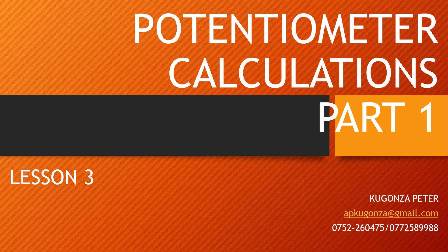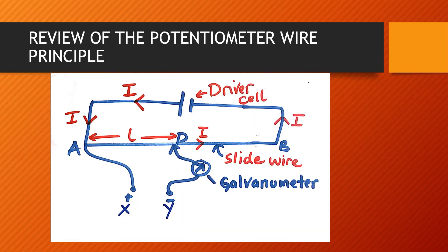Hello everyone. In this lesson I'm going to explain the potentiometer calculations, but these calculations are based on the applications of the potentiometer wire that I explained in lesson two, that's why I have referred to them as part one. Before we get into those calculations we need to review the principle of the potentiometer wire. If a driver cell is connected to the potentiometer wire it maintains a steady current through that wire. Since the wire AB has uniform resistance, it has a constant resistance per centimeter, and when the current flows through it the PD per centimeter of the wire is constant.